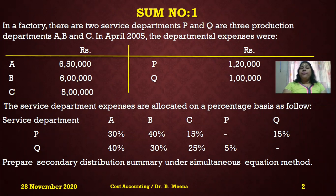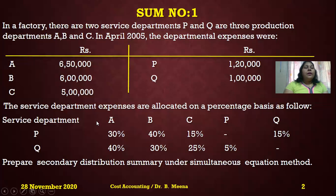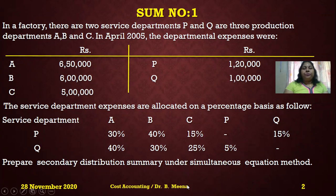In a factory there are two service departments P and Q and three production departments A, B, and C. In April 2005, the department expenses for A, B, C, P, and Q are given. The service department expenses are allocated on a percentage basis: service department P serves A at 30%, B at 40%, C at 15%, and Q at 15%. Service department Q serves A at 40%, B at 30%, C at 25%, and P at 5%.